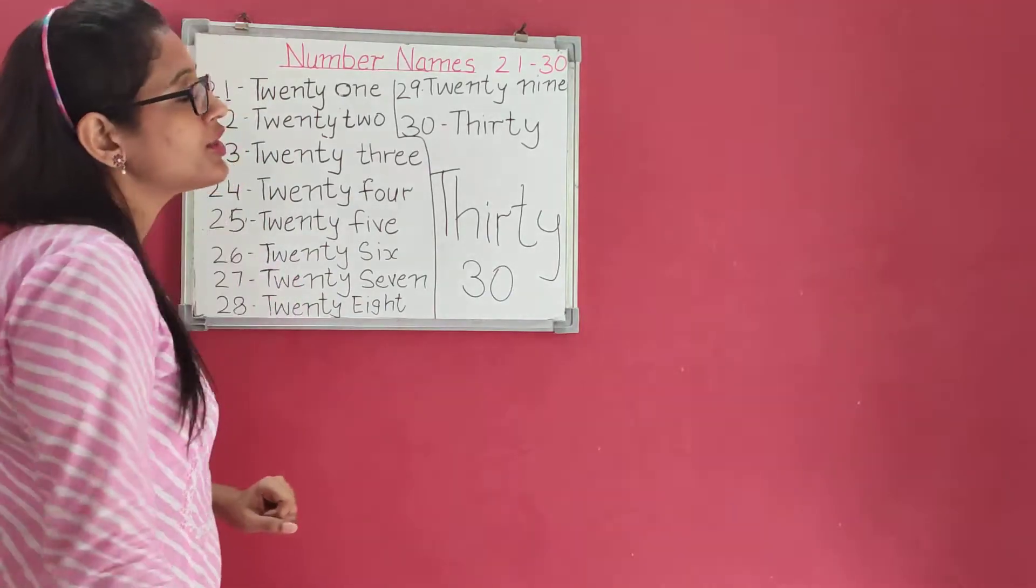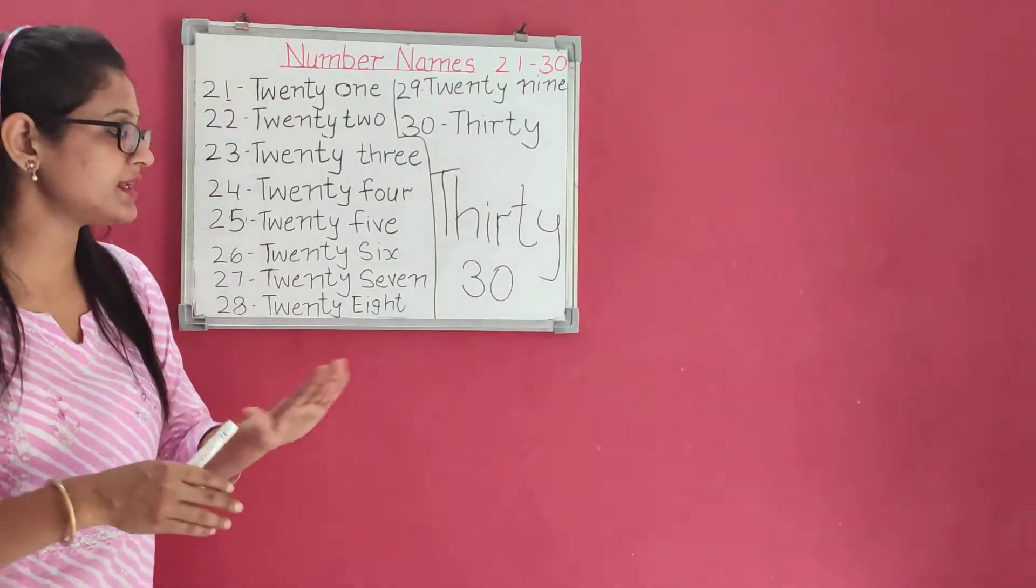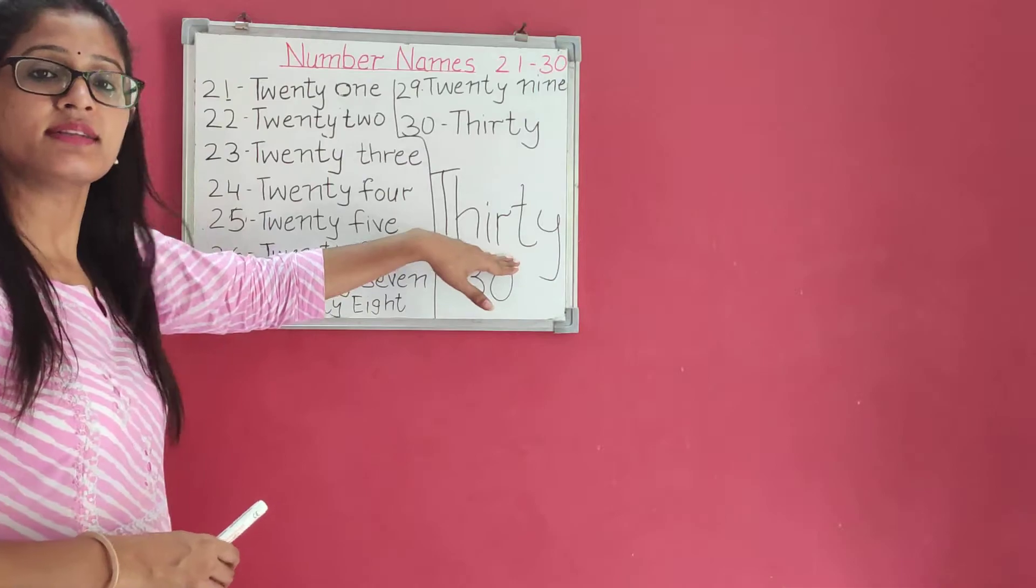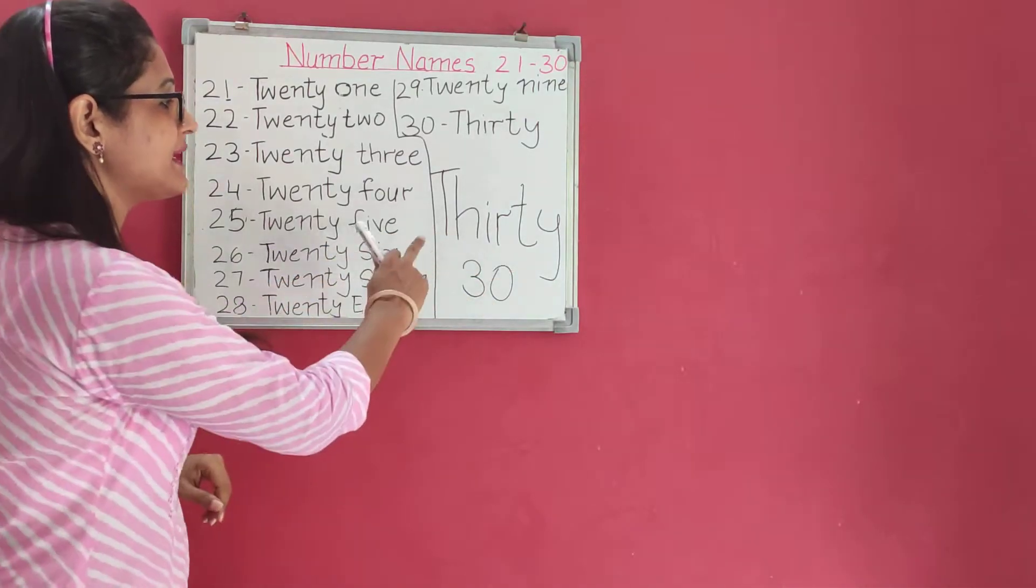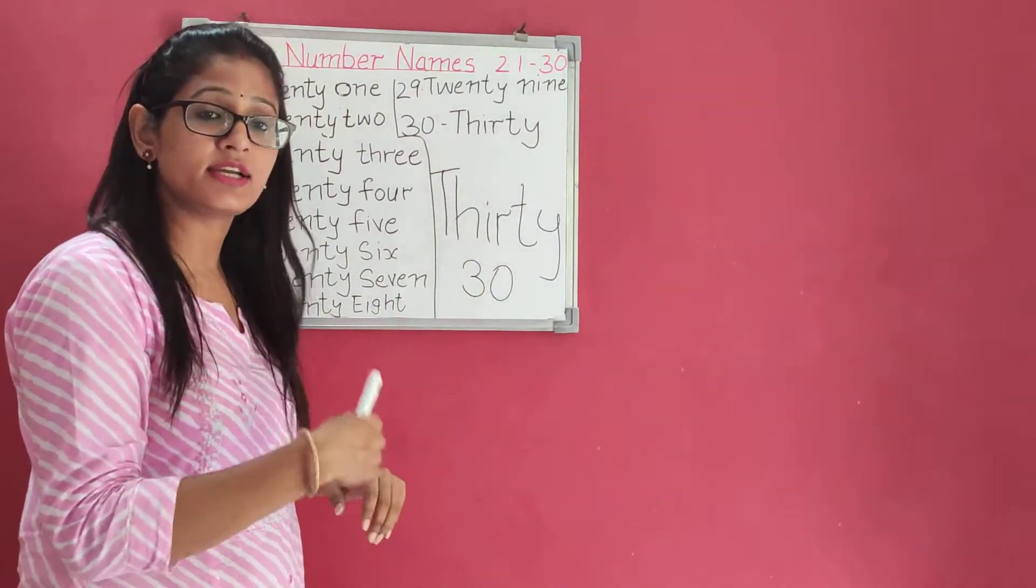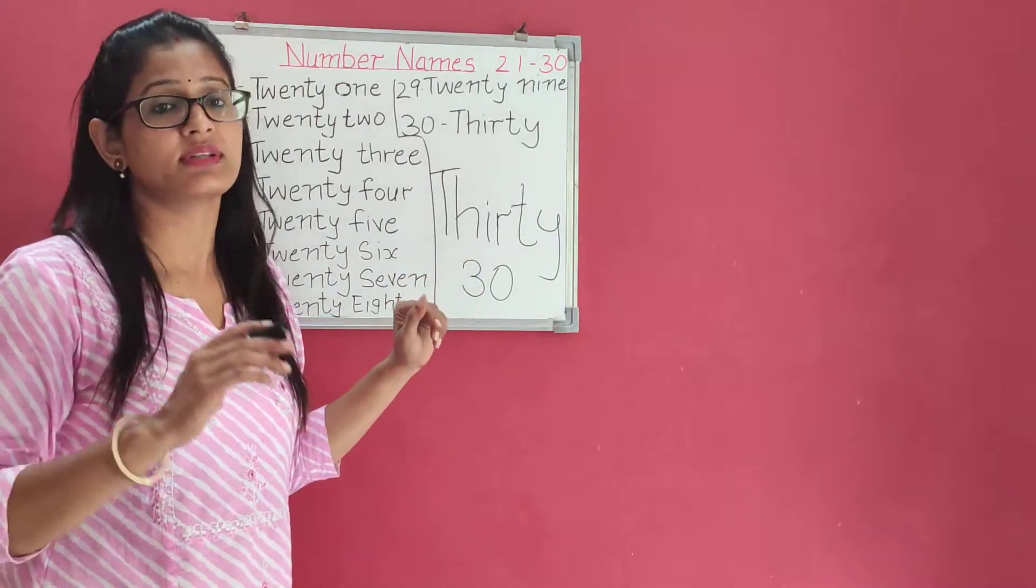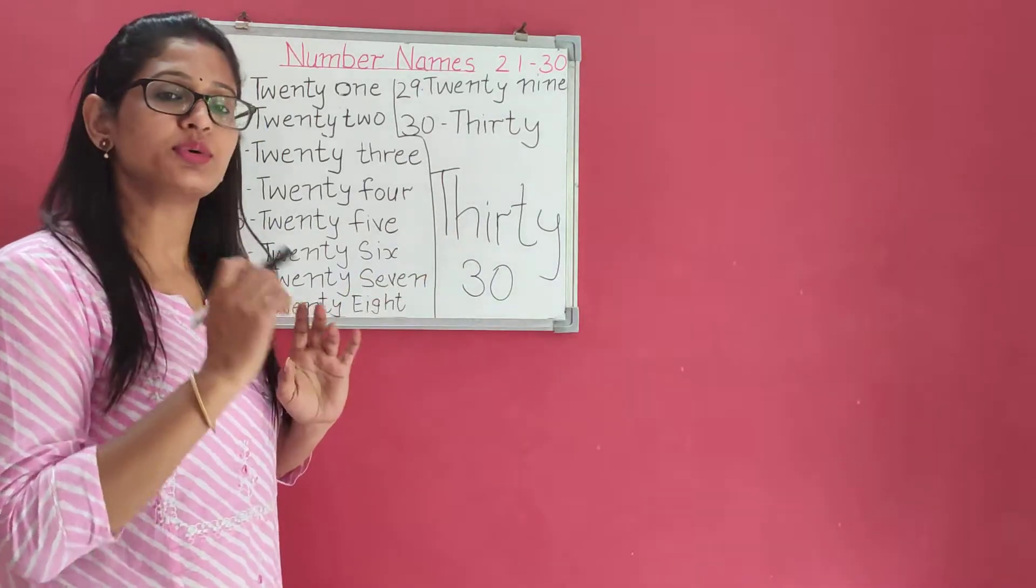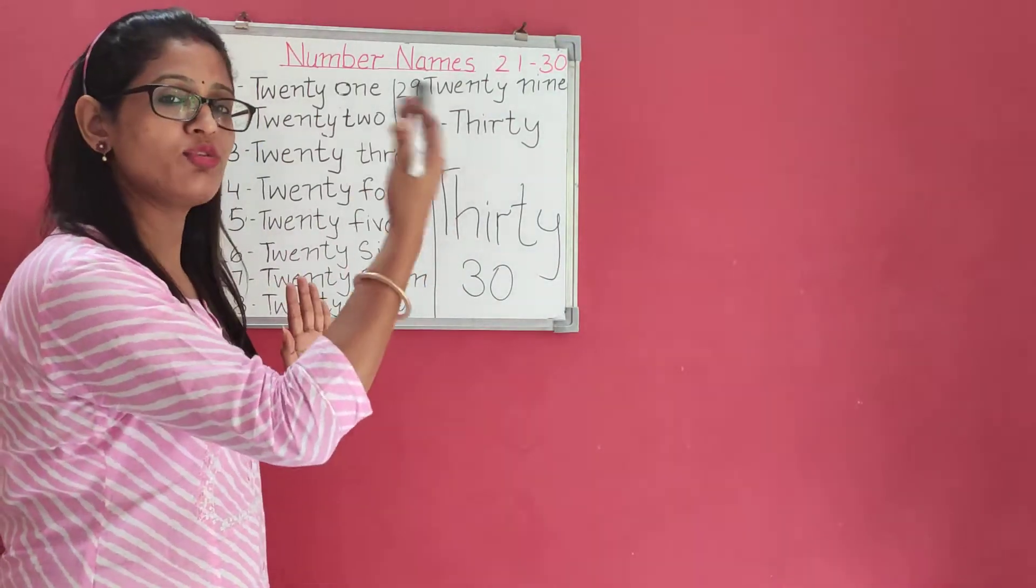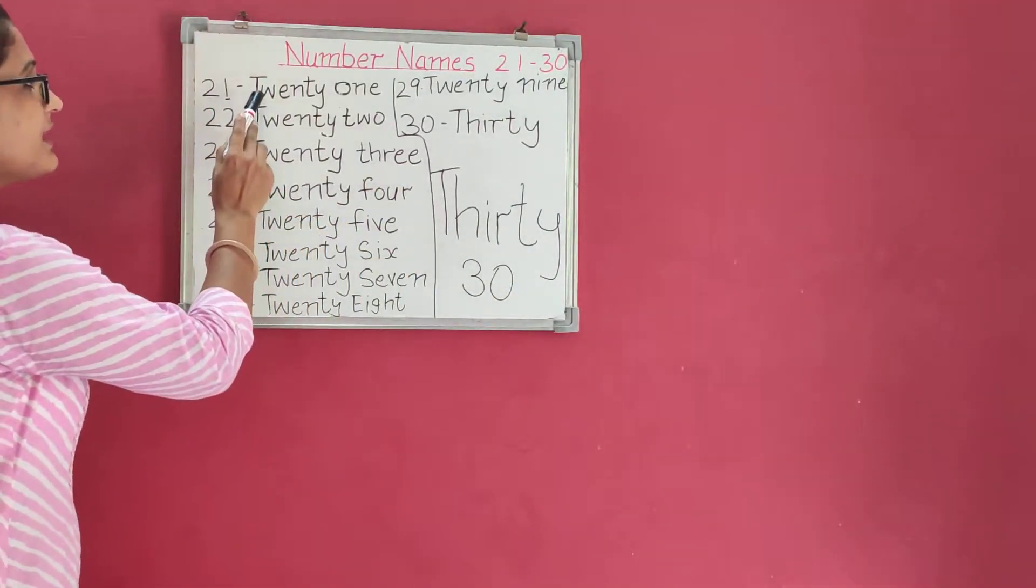You know what you have to learn? If you have learned thirty, number names thirty-one to forty will be easier for you because you have to write down thirty then one. Right? What we have to learn? Twenty-one then one, two, three, four, five, six, seven, eight, nine.